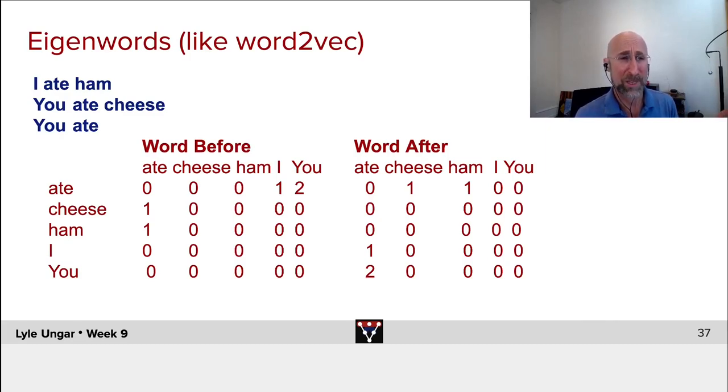And what does eigenwords, or if you think of the way I'm doing it formally here, or Word2Vec, which we'll cover in detail next week, do more generally? It takes every word, like ate, and says, what word did it show up? Which word showed up before it? I showed up before it once. You showed up before it twice.